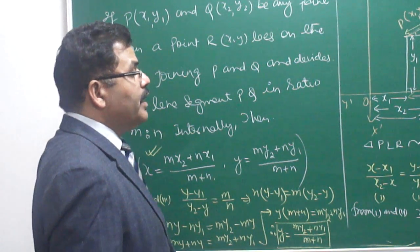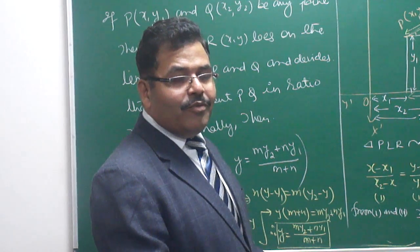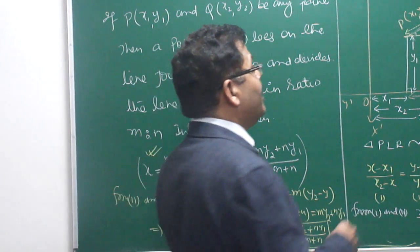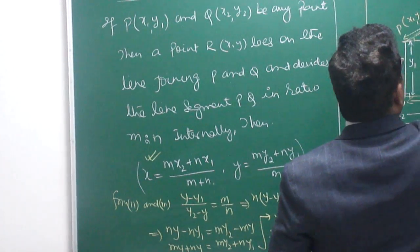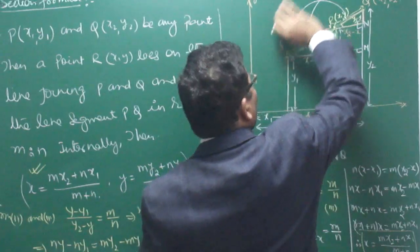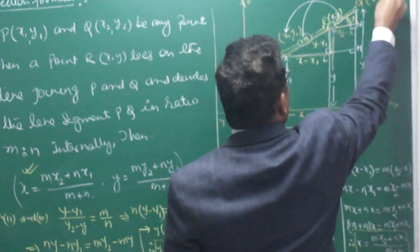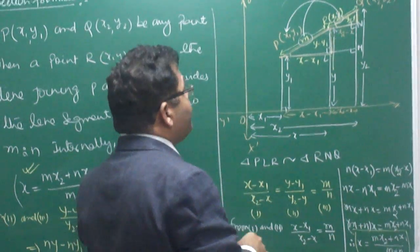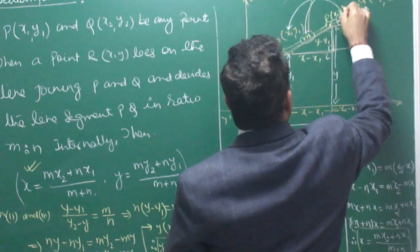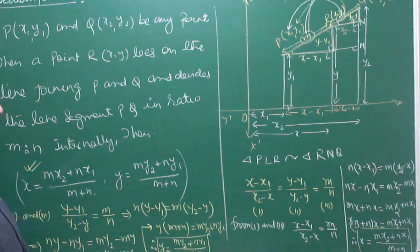Now the question is how to learn and memorize this. The trick is: Mx2 — multiply M to x2 (the far point) and N to x1 (the near point), add them, divide by M + N. Similarly, My2 + Ny1 divided by M + N. That is the main feature — learn it this way.